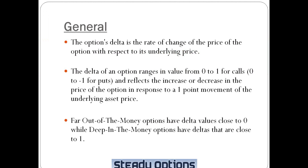So what is Delta? Options Delta is the rate of change of the price of the option with respect to its underlying price. Delta of an option ranges in value from 1 to 0 for calls or minus 1 to 0 for puts, and reflects the increase or decrease in the price of the option in response to a one-point movement of the underlying asset price.